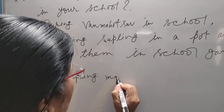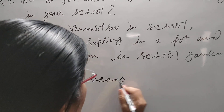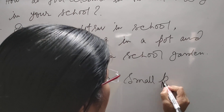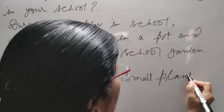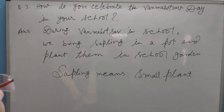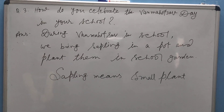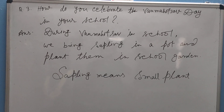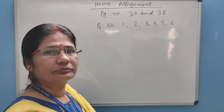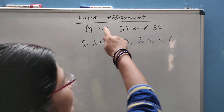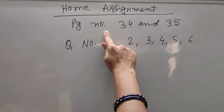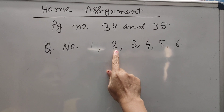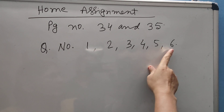Sapling means a small plant. Now home assignment: page number 34 and 35, question number 1, 2, 3, 4, 5 and 6.